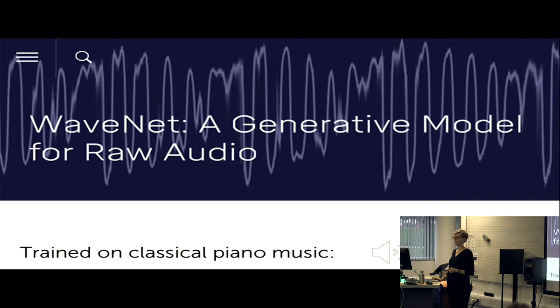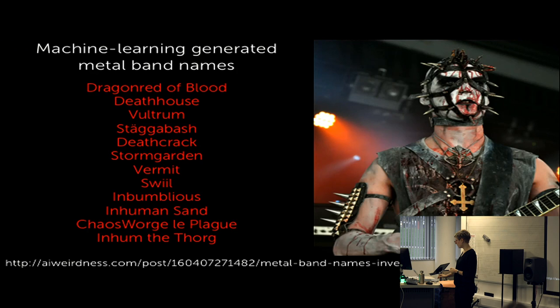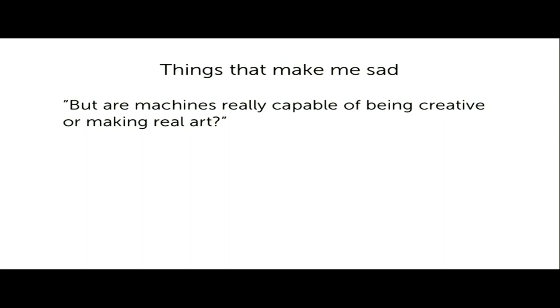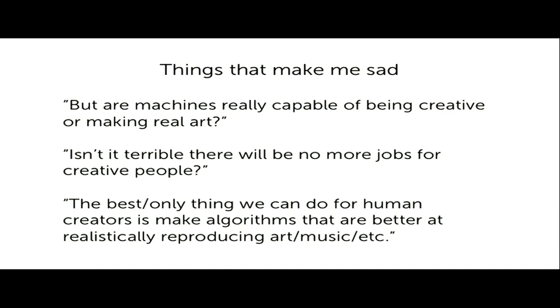Now, because work like Janelle Shane's, like WaveNet, has been getting a lot of media attention in the last few years, often people, hopefully not people in this room, look at these types of algorithms and say, oh, goodness, this isn't very good. Are machines really capable of making art? Or isn't it terrible that once these algorithms get better, there are not going to be any more jobs for creative people? Or people say, well, the best thing we can do or the only thing we can do for human creators is to make algorithms that are better at realistically reproducing art, music, etc. To make these metal band name generators better, to make this piano generator better, and so on. And actually, this is the thing that I often hear from machine learning researchers working in this space. All of these things make me kind of sad. I think these are the wrong questions.